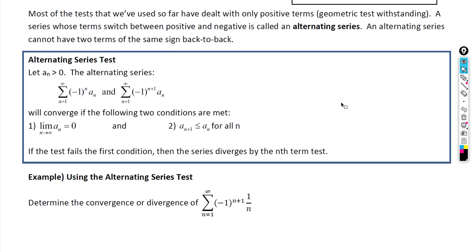Most of the tests we've used so far deal with only positive terms. A series whose terms switch between positive and negative is called alternating. An alternating series cannot have two terms of the same sign back to back — if one term is positive, the next has to be negative and vice versa.